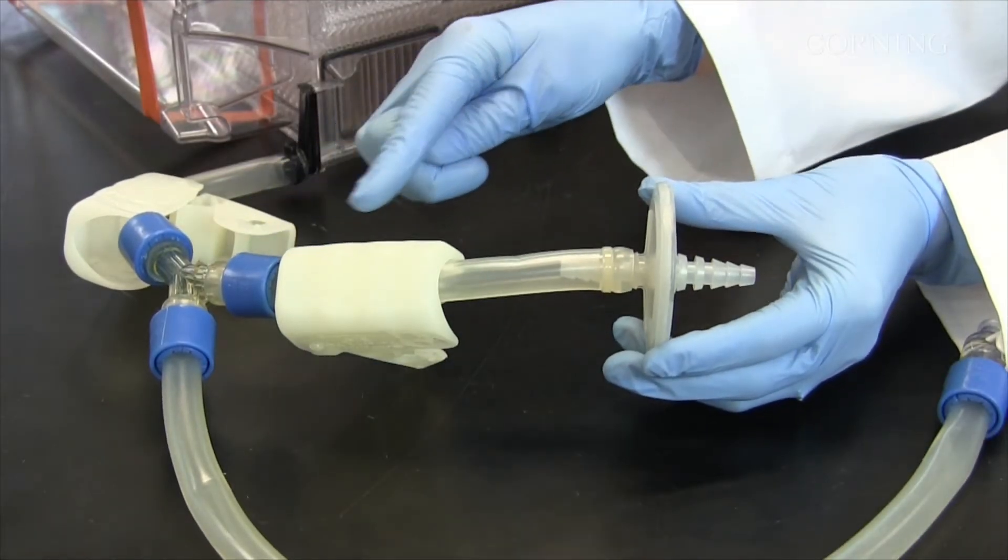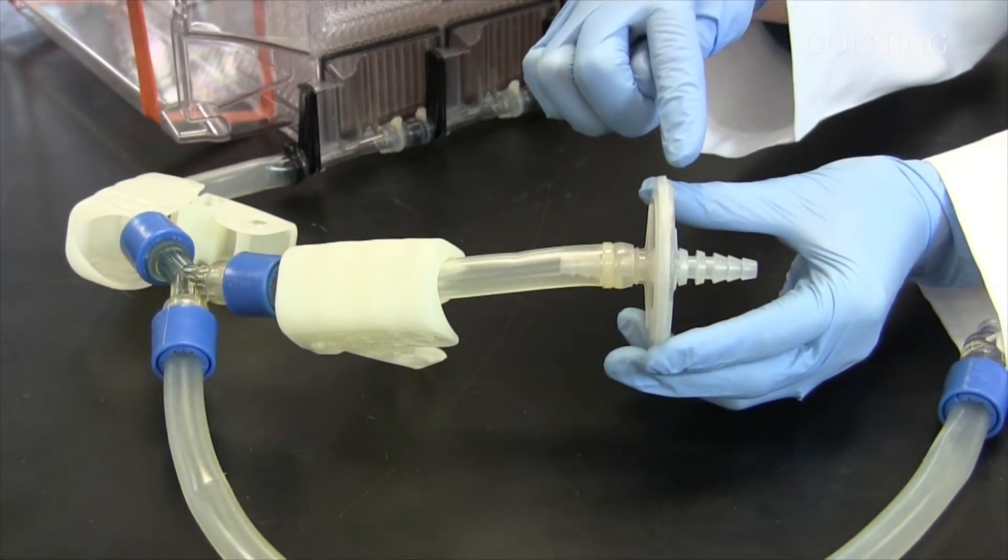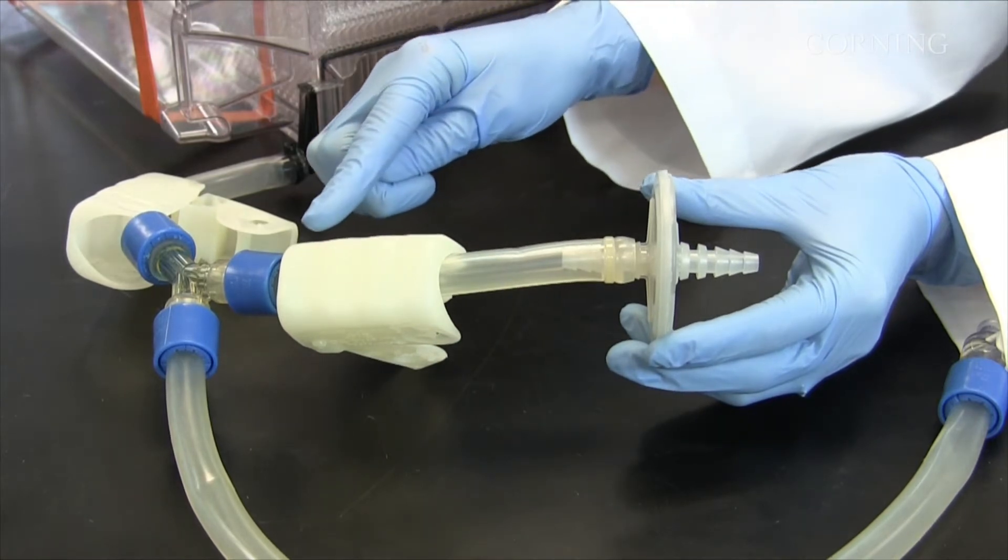The chase tubing is part of the liquid handling tubing. It is used to evacuate excess fluid from the liquid handling tubing.